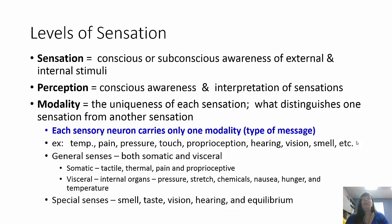Versus perception, which is the actual conscious awareness and how we interpret those sensations. Everybody can have sensations of temperature, but how we perceive temperature can actually be different — how we interpret temperature. For example, somebody might think that 70 degrees is cold, whereas somebody else might think that 70 degrees is hot. So the sensation is going to be the same, the stimulus will be the same, but our interpretation of that stimulus could be different.